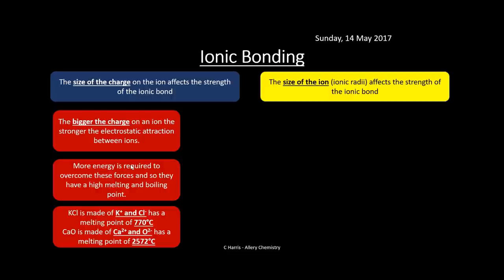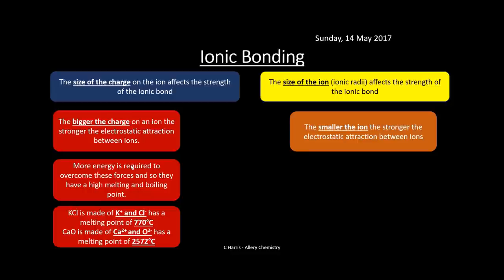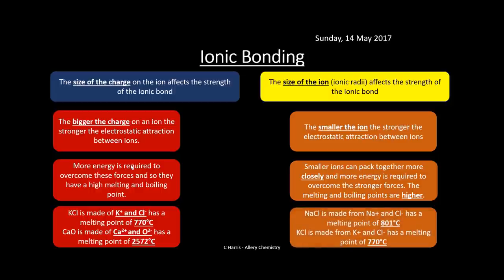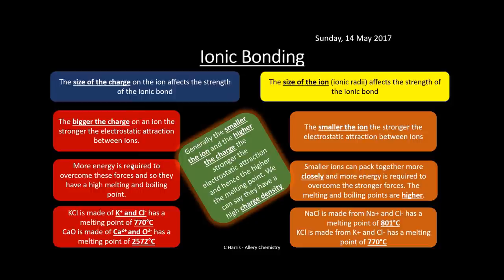The size of the ion - the ionic radius - also affects the strength of the ionic bond. The smaller the ion, the stronger the electrostatic attraction because smaller ions pack together more closely, so more energy is needed to overcome these forces. Sodium chloride (Na+ and Cl-) has a melting point of 801°C, whereas potassium chloride, where potassium is a bigger ion, has a lower melting point of 770°C. Generally, the smaller the ion and the higher the charge, the stronger the electrostatic attraction - we describe this as high charge density.